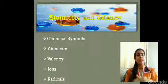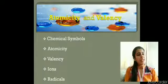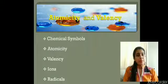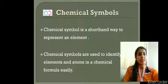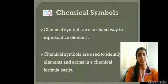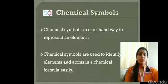Before starting with these two terms, I would like to introduce some chemical symbols. Chemical symbols are a shorthand way to represent the chemical elements. Scientists have discovered around 118 elements, and writing their full names every time is difficult, so scientists decided to represent these chemicals in an easier way.